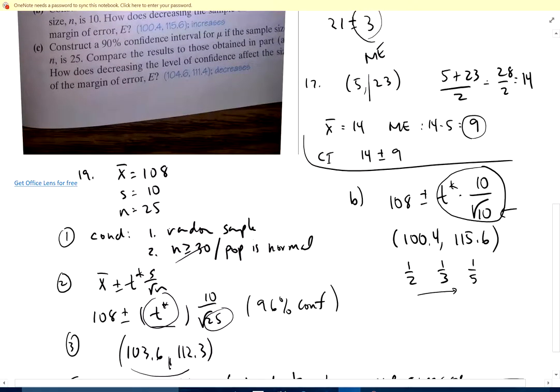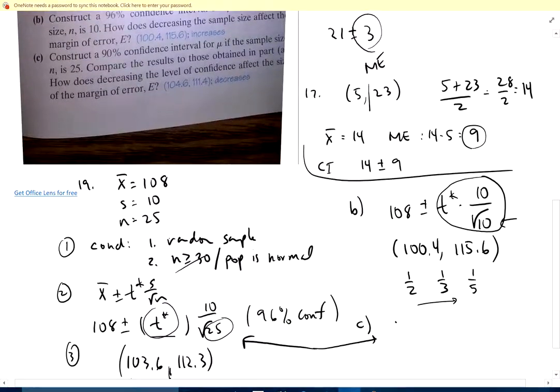Then the same thing for C. You get 90% confidence interval for sample size 25. It's going to be the same formula here except T star will be slightly different. So if I decrease the confidence, the interval gets smaller, right? Because you're less confident. T is going to be smaller, it's going to be a smaller interval. I think that's up to 19. Was that 19? Yeah, it's 19. So we'll let this video go at that.